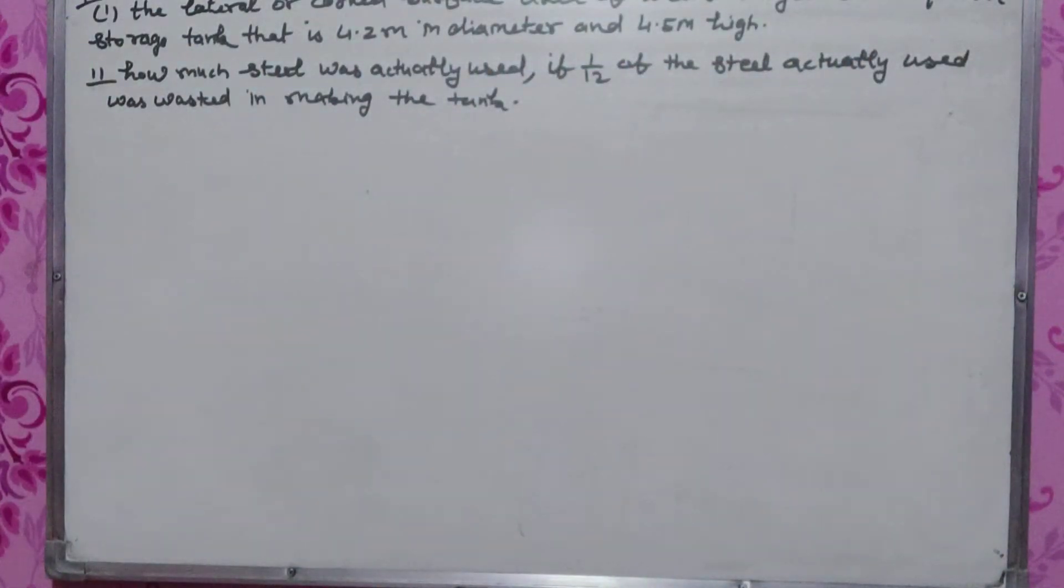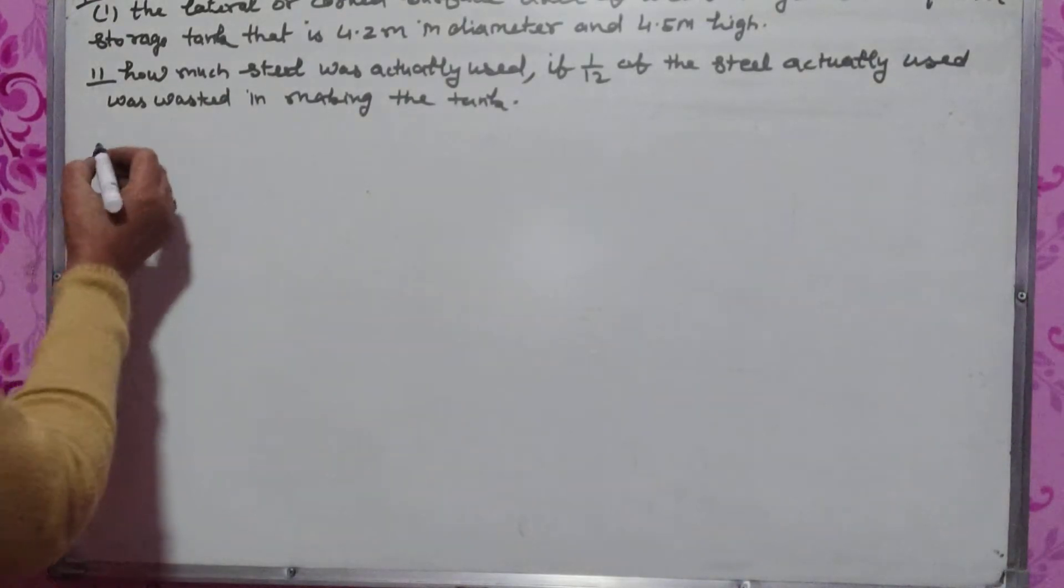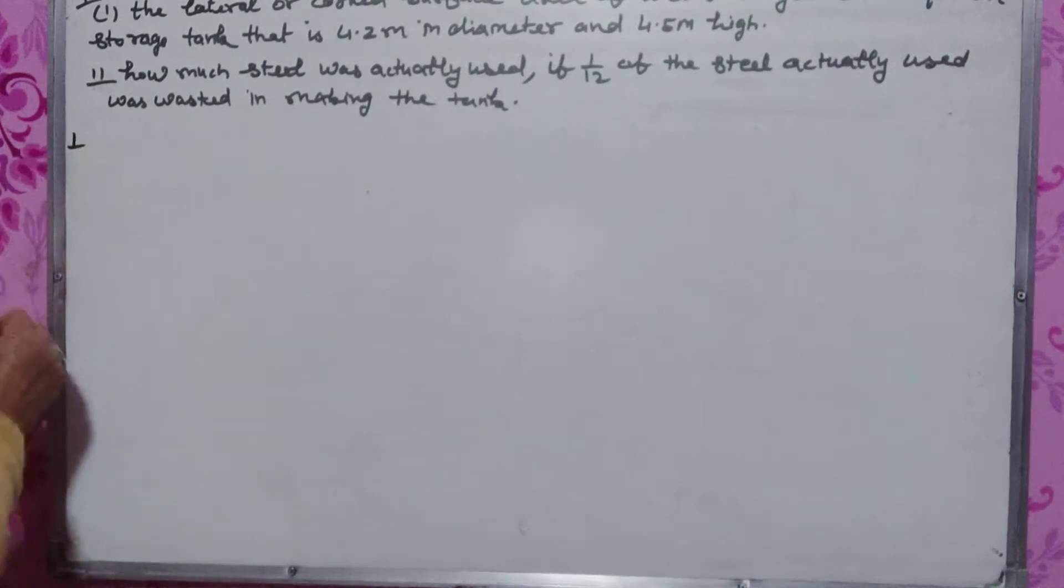I am in class 9th exercise 13.2, question 9. Find the lateral or curved surface area of a closed cylindrical petrol storage tank that is 4.2 cm in diameter and 4.5 cm height. First part is radius.